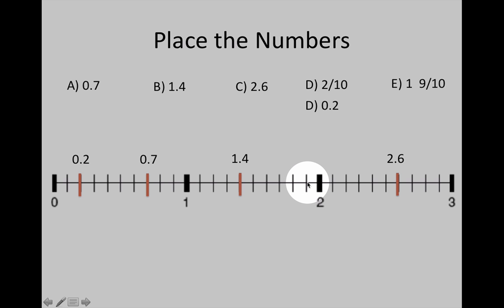You could also do a little shortcut for this one. You know that 9 tenths is 1 away from 10 tenths, which would be a whole number, the number 2. So you could have counted backwards because 2 is the same as 1 and 10 tenths. Either way, we mark it right there.